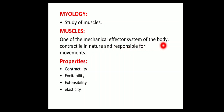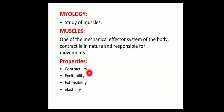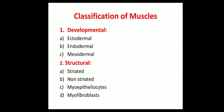What are muscles? Muscles are one of the mechanical effector systems of the body, contractile in nature and responsible for movements. What are the different properties of muscle? These are contractility, excitability, extensibility, and elasticity.